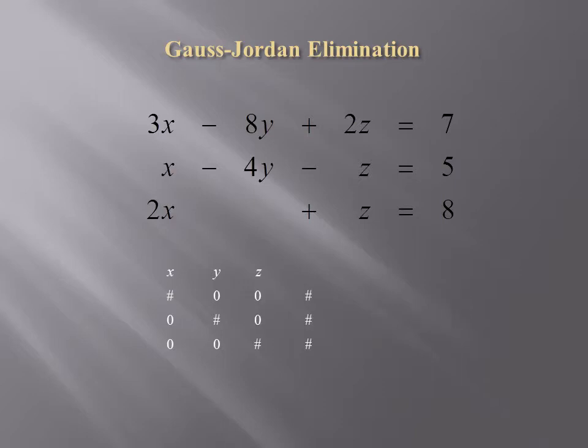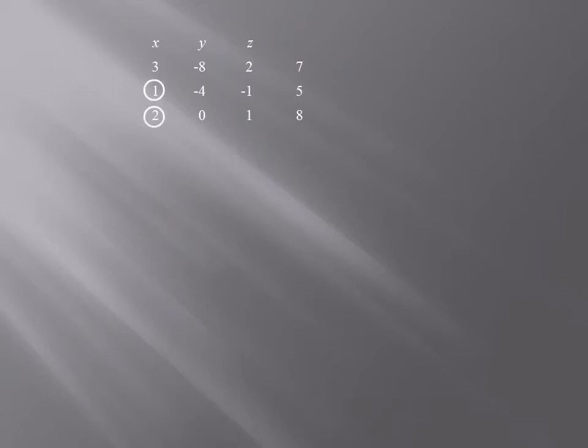This system will have a unique solution if the numbers along the main diagonal are not equal to 0 — none of them can be 0. We begin by pivoting on the number 3 in the first row, first column.